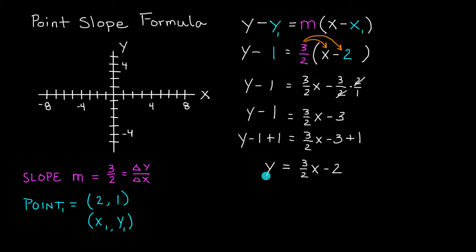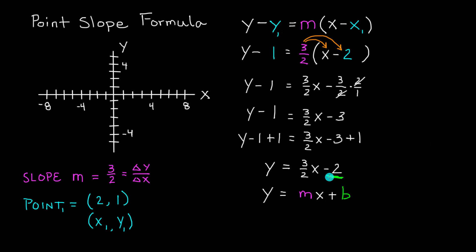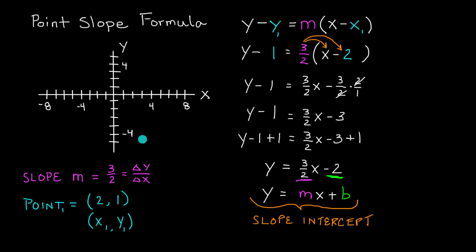We've created an equation of a line in slope-intercept form that has the slope of 3 over 2 and contains the point (2, 1). We started with point-slope formula and ended up with slope-intercept. As a reminder, slope-intercept form looks like y equals m times x plus b, where b is the location our line crosses the y-axis. In our case b is negative 2 and the slope is 3 over 2.